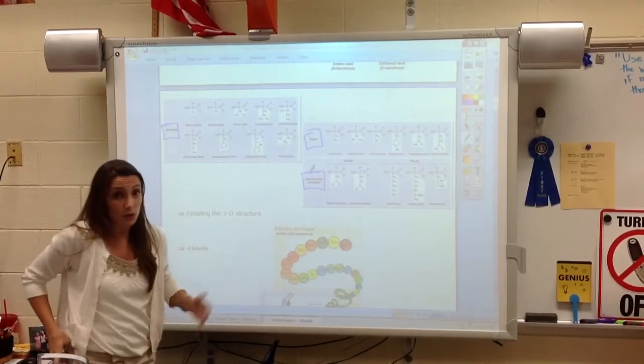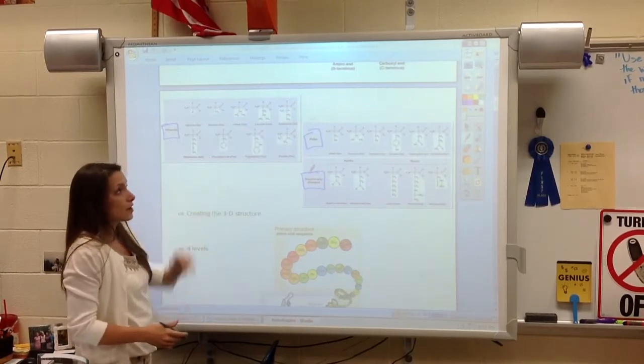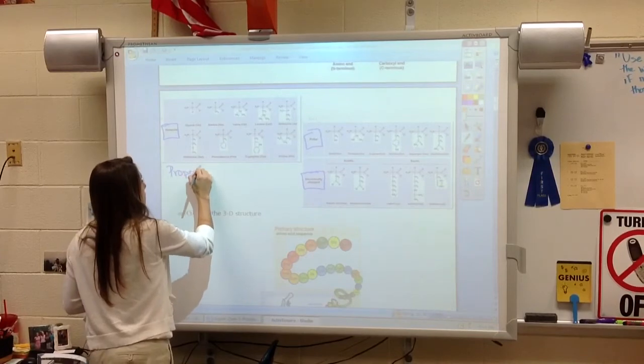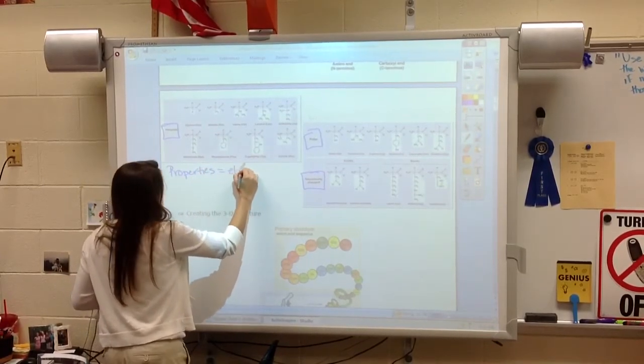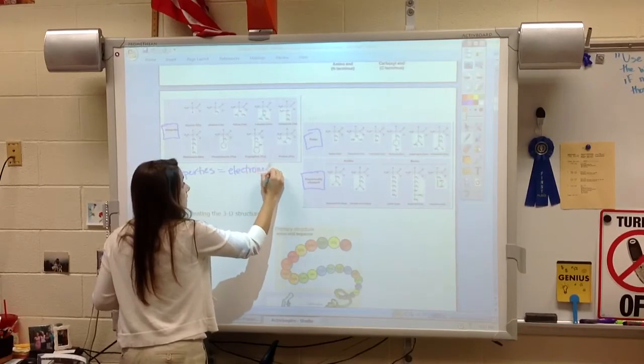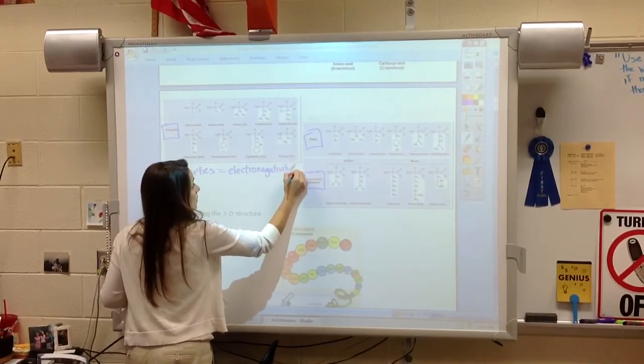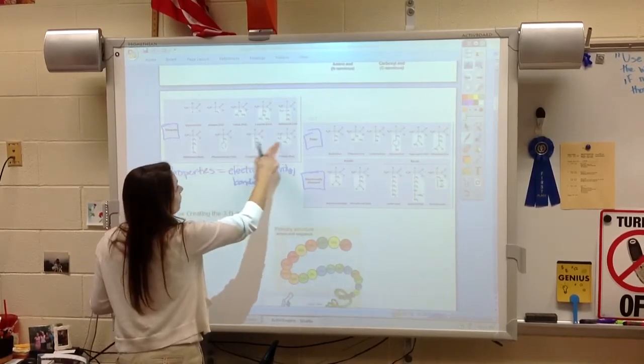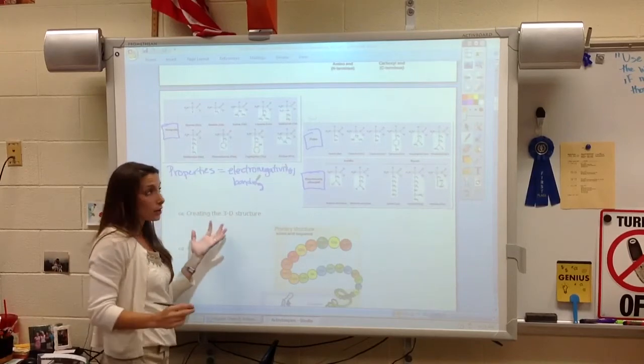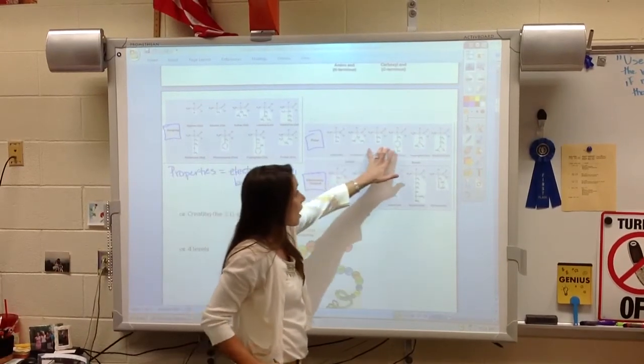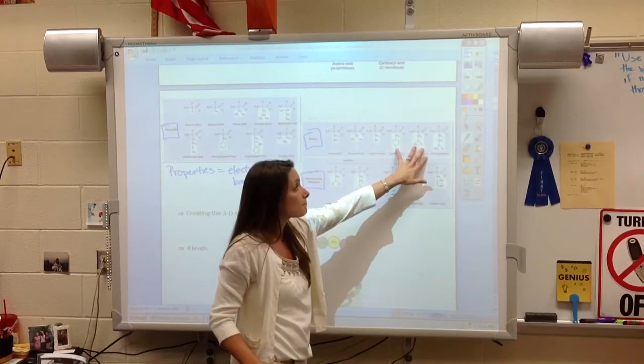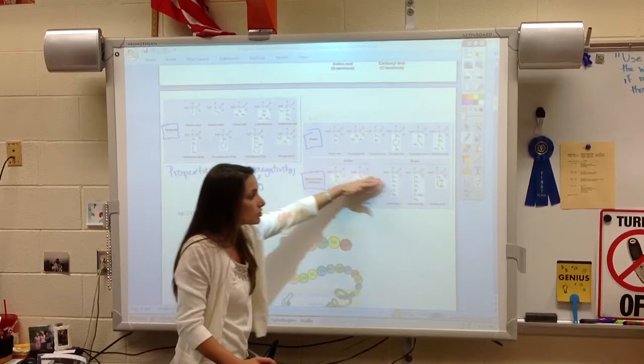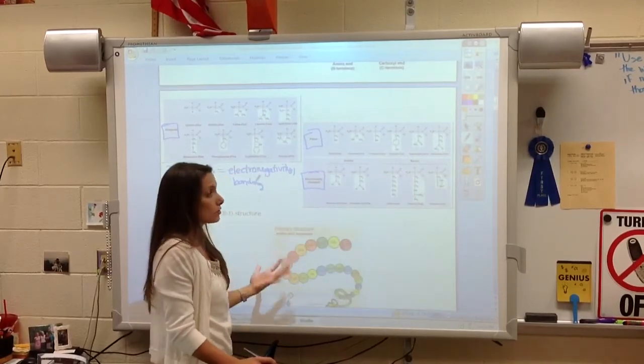You just have to know that these amino acids have different properties. And the properties depend on the electronegativity and the bonding. Ones with lots of carbon and hydrogen, those are going to be nonpolar. Ones with lots of oxygen and sulfur and amine, those are going to be polar. And any that have actually donated or accepted those will be charged.